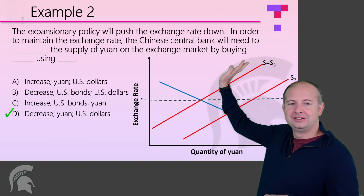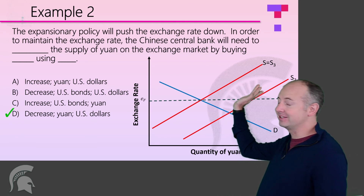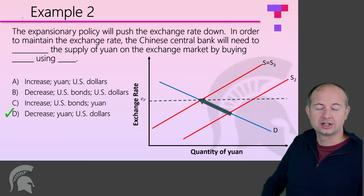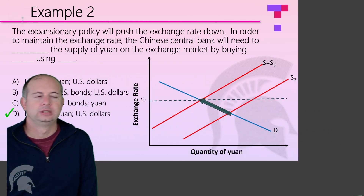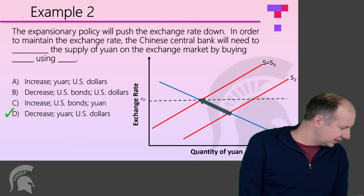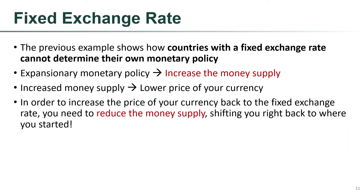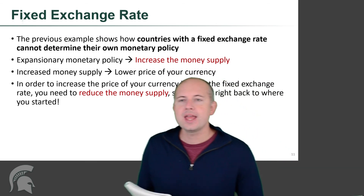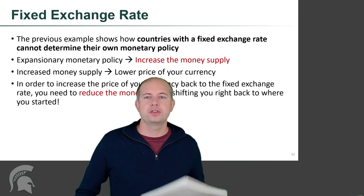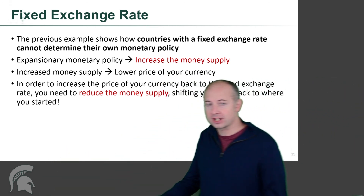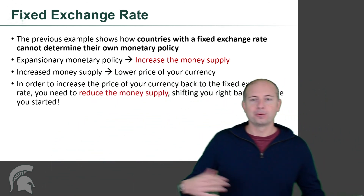Essentially, we started here, then moved down when we tried to do expansionary monetary policy, then realized that messed up our fixed exchange rate — so we had to go right back to where we started. The previous example shows how countries with a fixed exchange rate cannot determine their own monetary policy. Expansionary monetary policy increases the money supply, which lowers the price of the currency; to bring the exchange rate back to target, you must reduce the money supply — shifting right back to where you started.